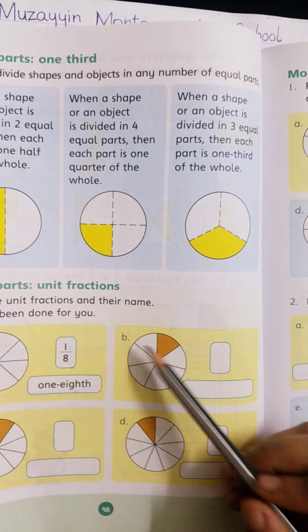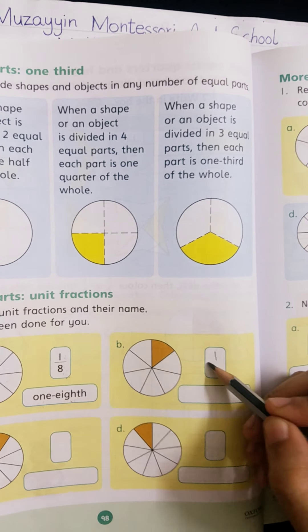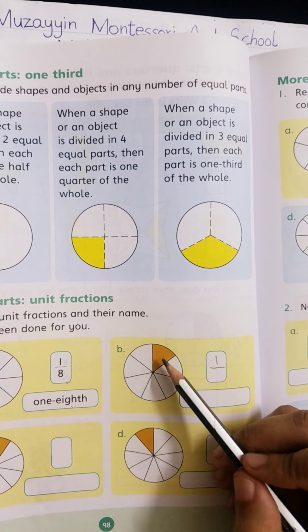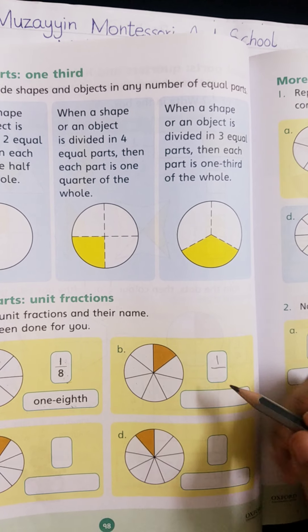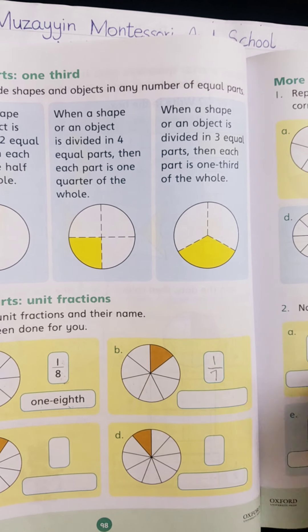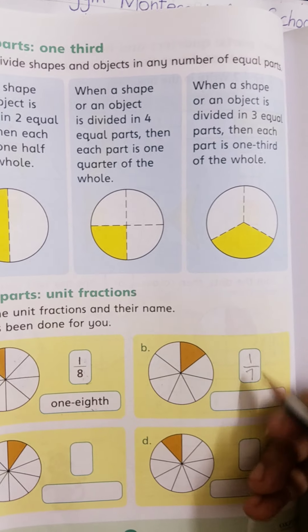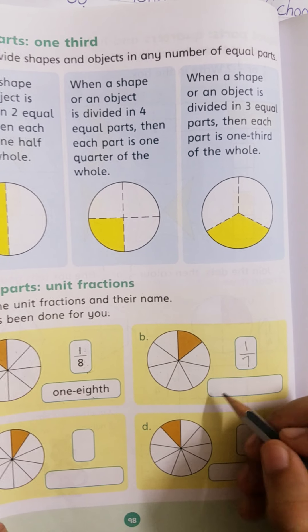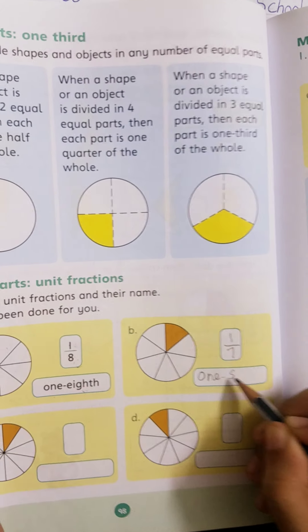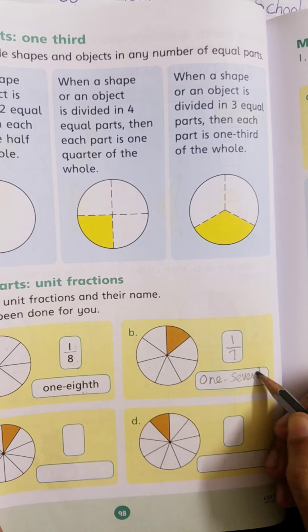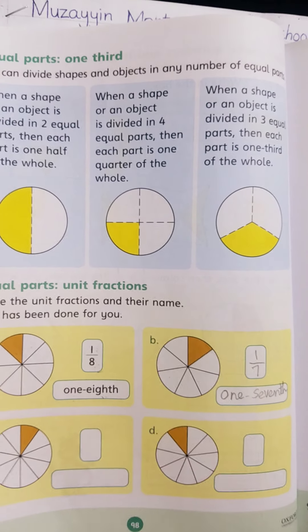Similarly, part B, 1 is colored. This is a unit fraction. And how many total parts? 1, 2, 3, 4, 5, 6, 7. Total number of parts are 7. 1 by 7. This is a fraction, also called one-seventh. Do this question in your book.